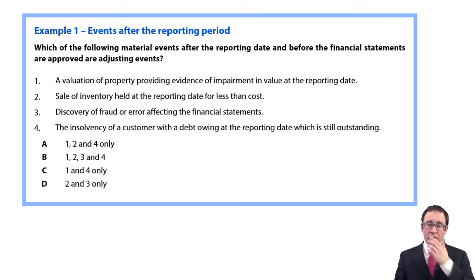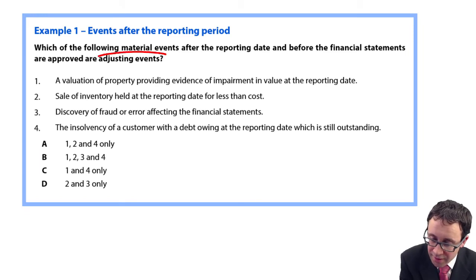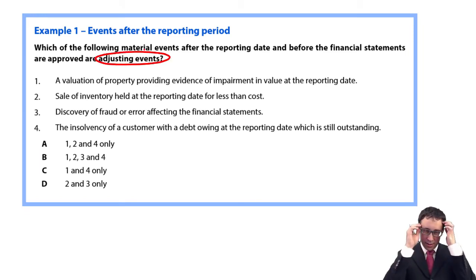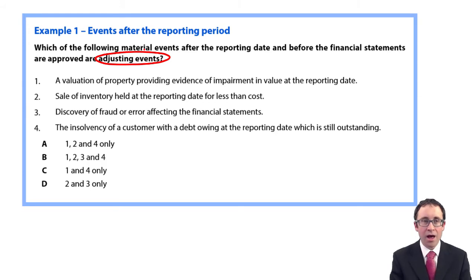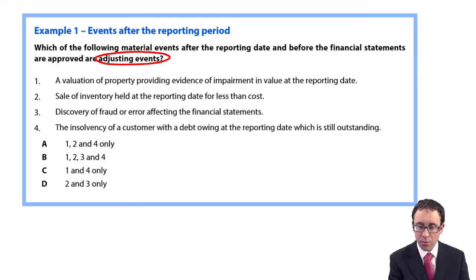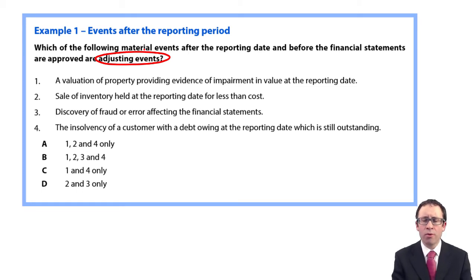The question asks: which of the following material events after the reporting date and before the financial statements are approved are adjusting events? Did the condition exist at the reporting date? We have four situations. Situation one: a valuation of a property providing evidence of an impairment in the value at the reporting date.